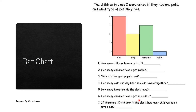Number six: how many children have a pet in Class 2? Not all students have a pet, so find the total: five plus three plus four plus one — you will get the answer. Number seven: if there are 30 children in the class, how many children don't have a pet? First find the answer to number six, then take 30 minus that answer to get the correct answer for number seven.